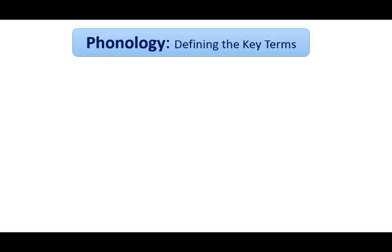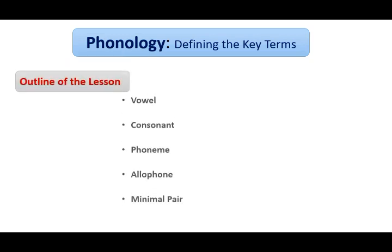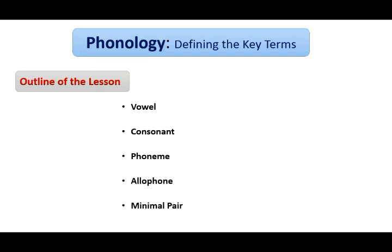The present lesson would be organized as follows: first I will define the terms vowel and consonant and see how they differ. The same thing will be done for phoneme and allophone, and finally this lesson will end by providing a definition of the notion of minimal pair. Let's start with the vowel — we all know that every language has vowels, but what is a vowel?